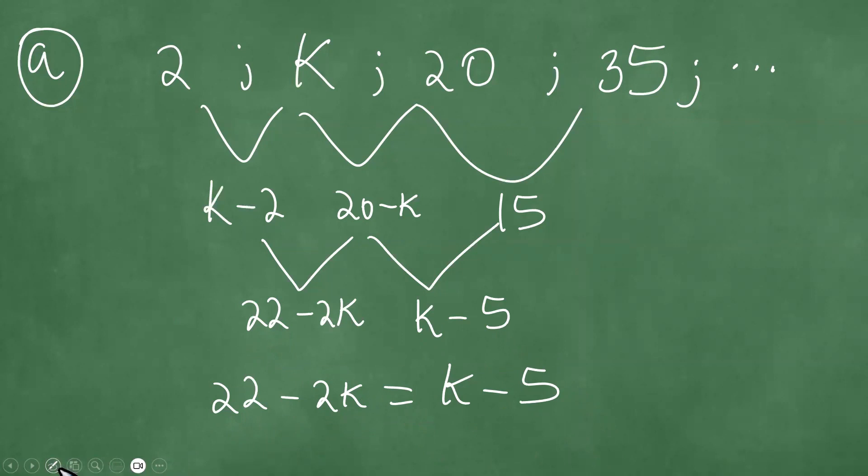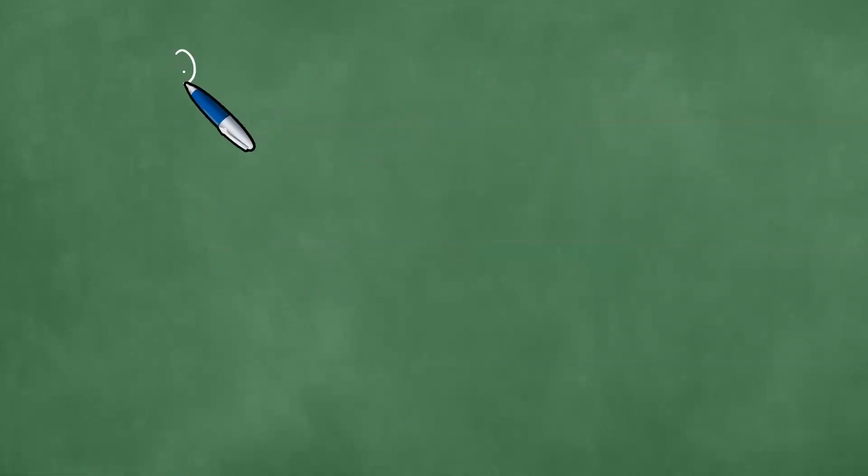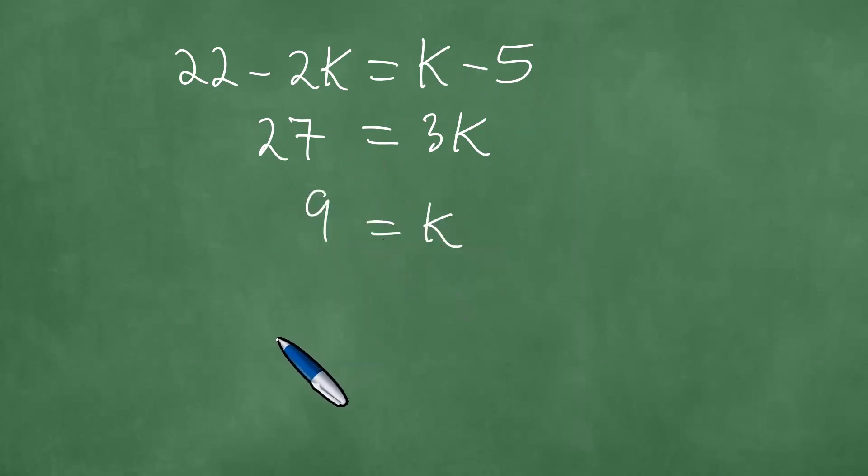Therefore, 22 minus 2k is equal to k minus 5. So when we have 3k, it is exactly the same as 27. Dividing both left and right by 3, we have that k equals 9.